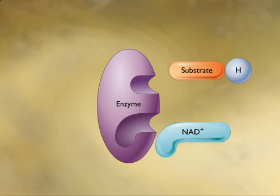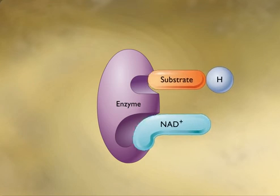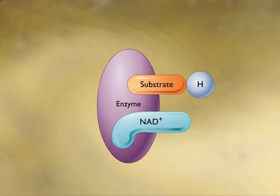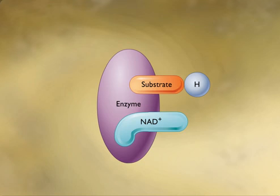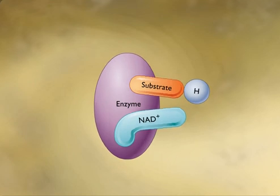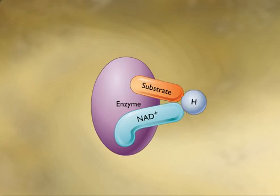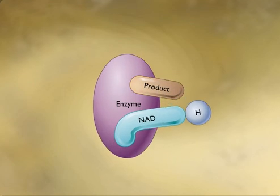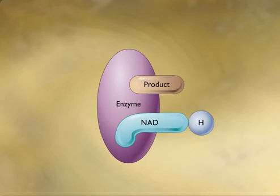Once the substrate and NAD+ are bound with the enzyme, the hydrogen is transferred from the substrate to the NAD+. In other words, the substrate is oxidized, loses the hydrogen, and the NAD+ is reduced to NADH.